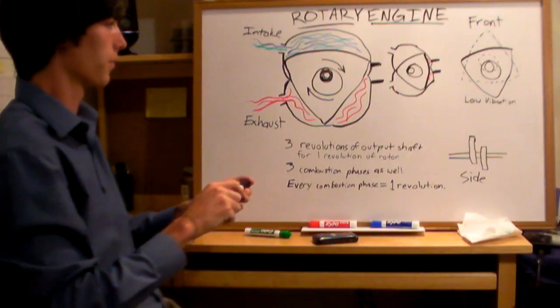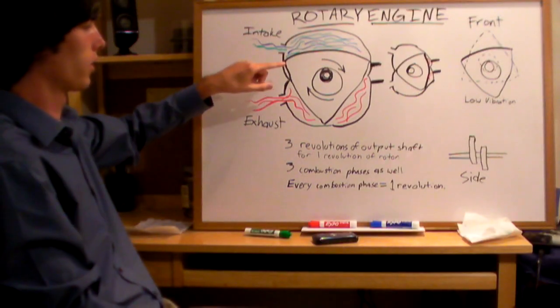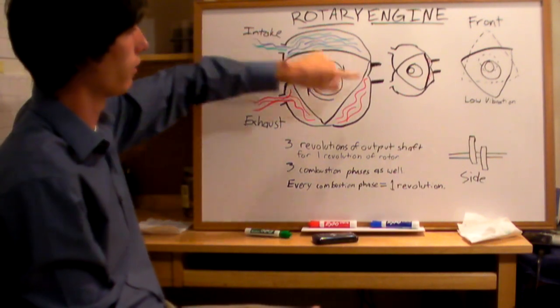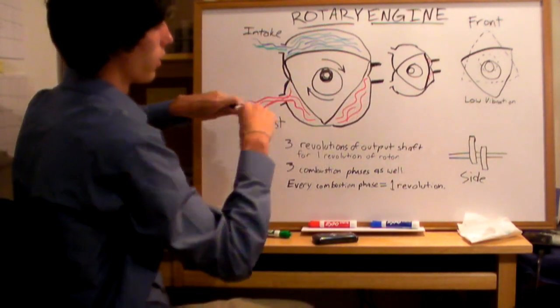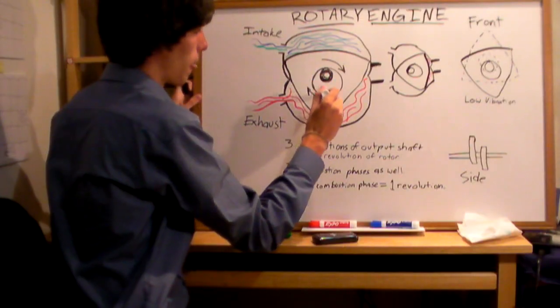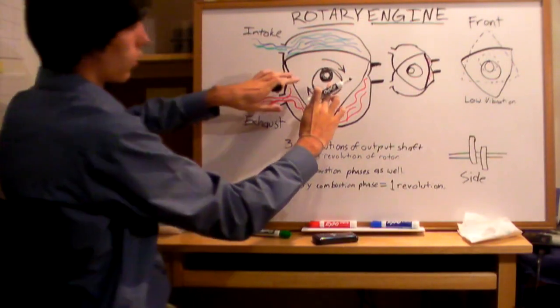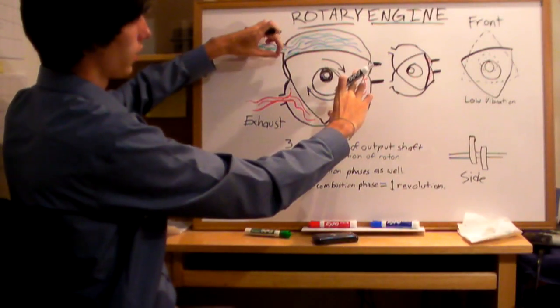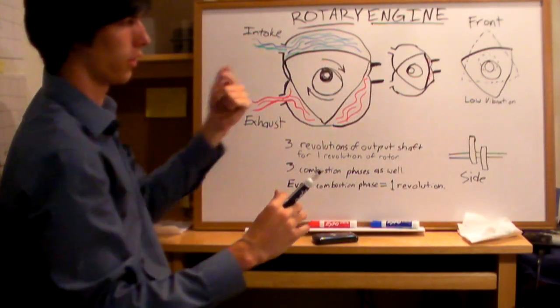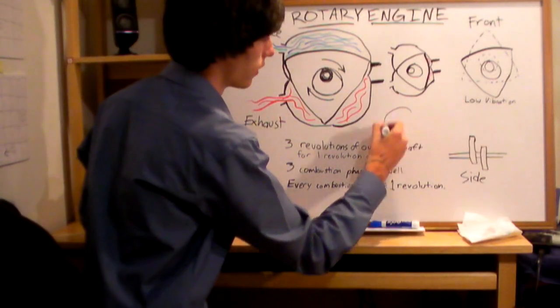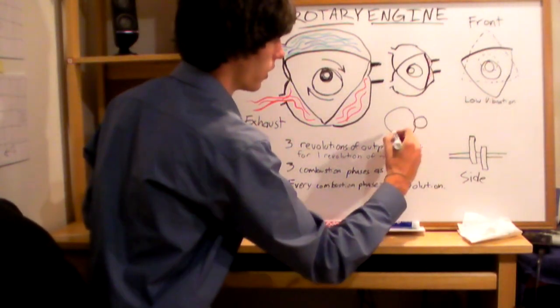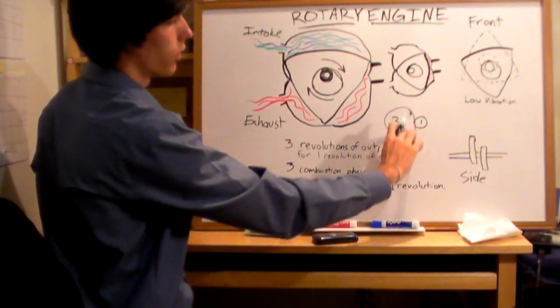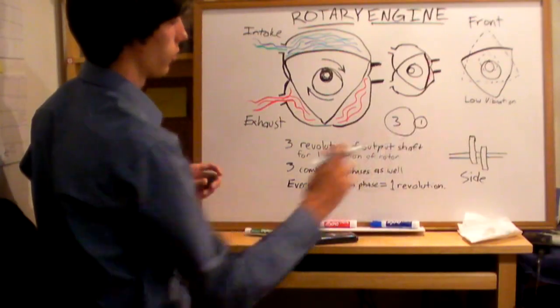For every three revolutions of the output shaft, that's what you get from one revolution of this rotor. As this rotor rotates one time around, this triangle goes completely 360 degrees, this output shaft is going to spin three times. You can think of it as a gear ratio, and this one's a three, and this one's a one. Every time this rotates once, you'll have three revolutions of this one.